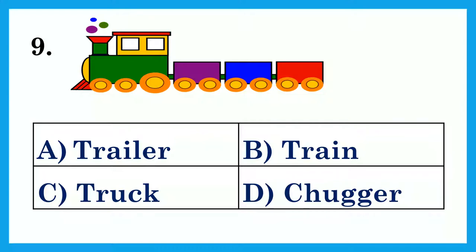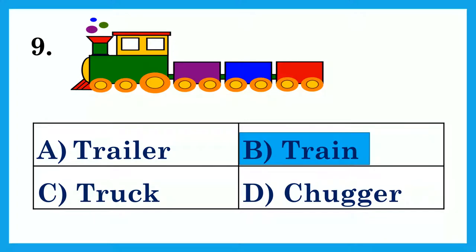Look at the picture and choose the correct word for it. Option A: Trailer. Option B: Train. Option C: Truck. Option D: Chugger. The answer is Option B: Train.